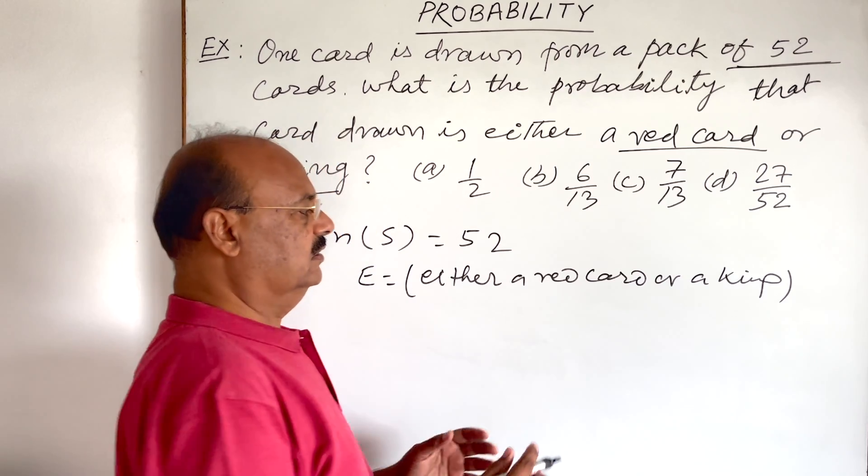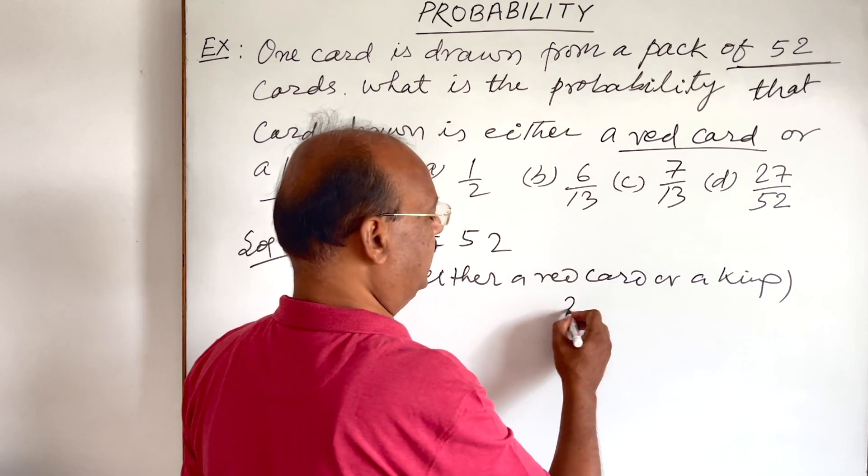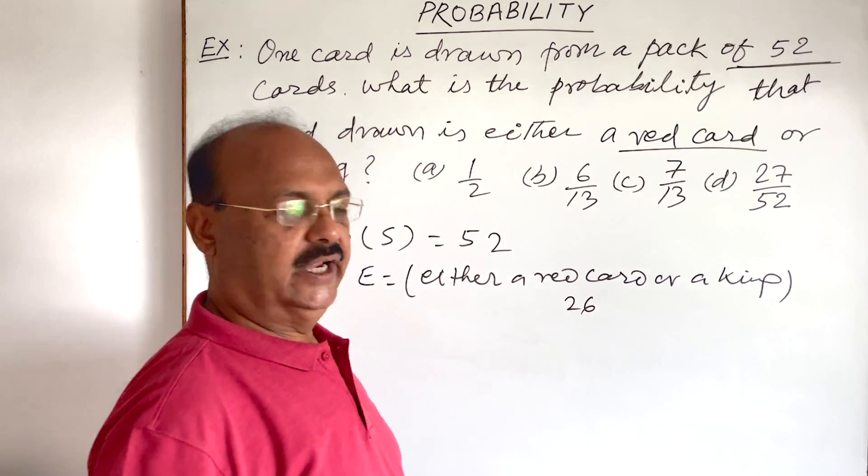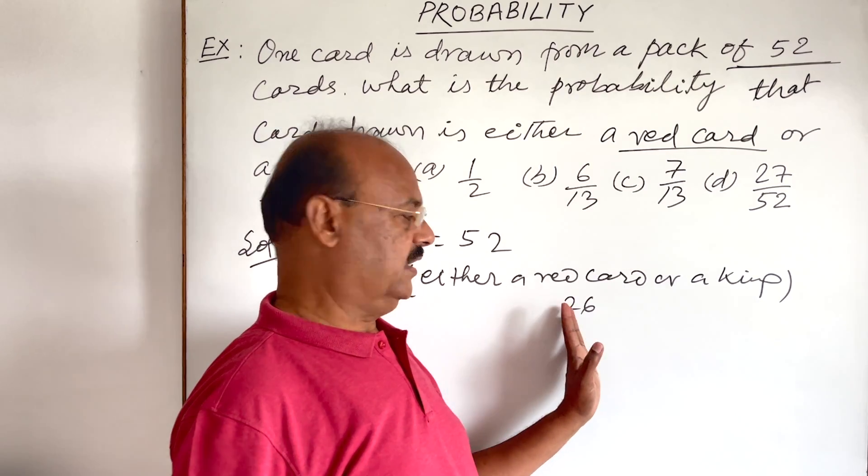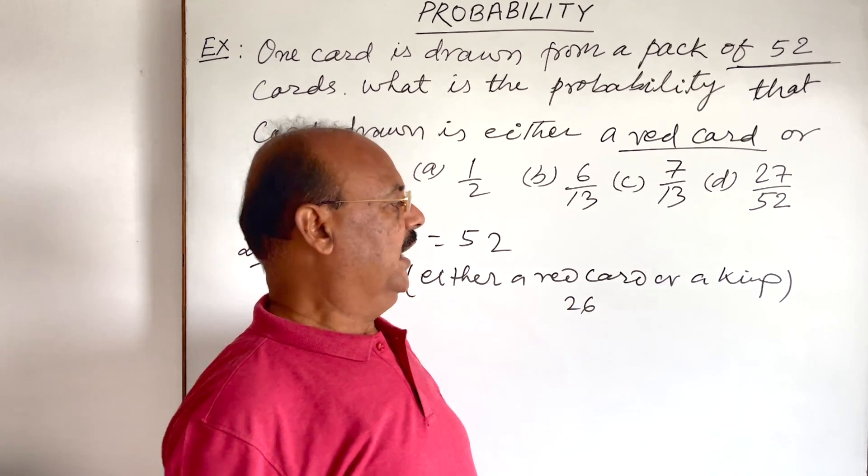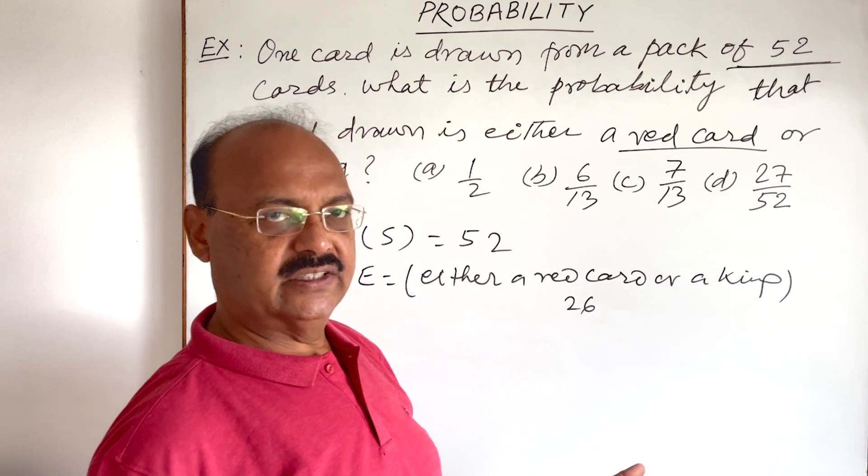We know that in total, there are 26 red cards. And out of these 26, already two kings are here - two red kings. And two more kings are in black color.